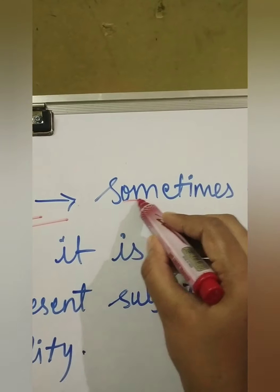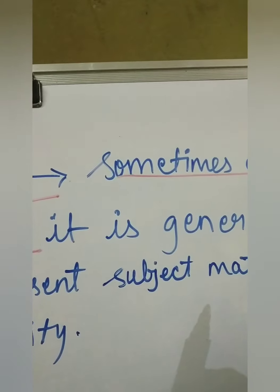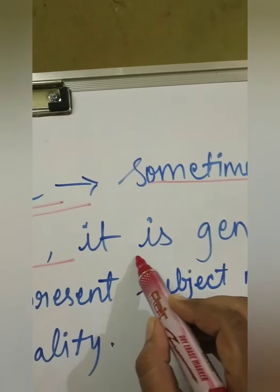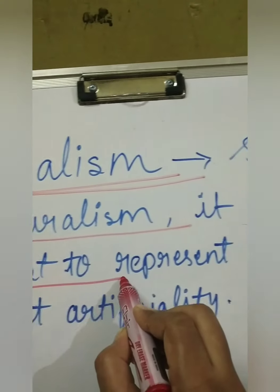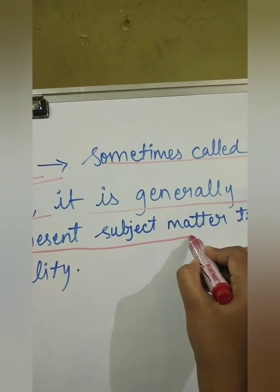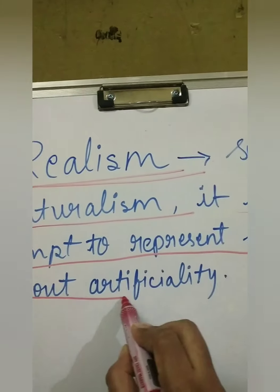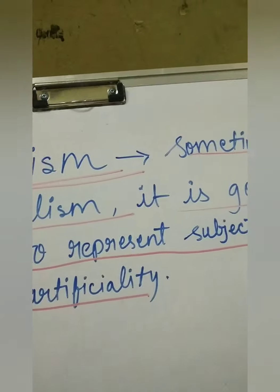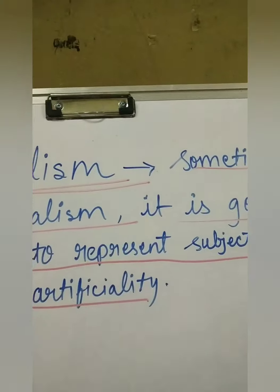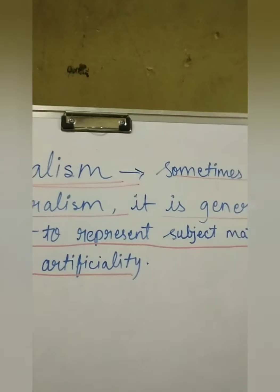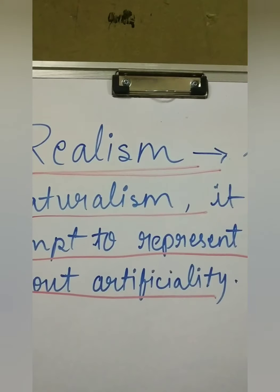Realism means — it is sometimes called naturalism, and it is generally the attempt to represent subject matter truthfully, without artificiality. So whatever themes he has chosen, he has represented them realistically, without mingling them with artificial effects.